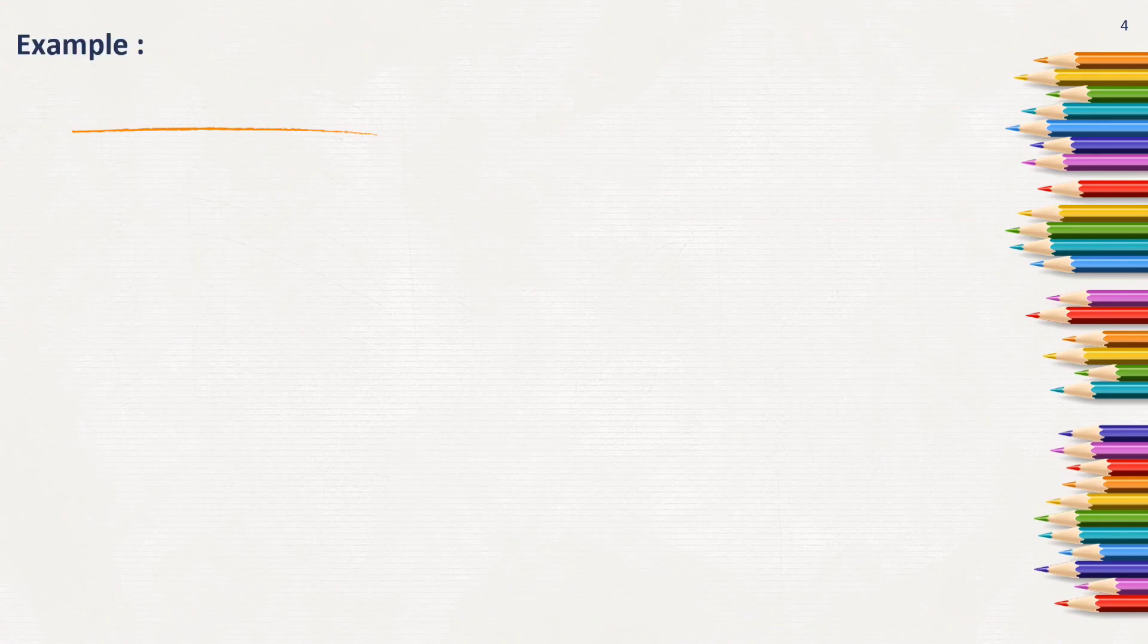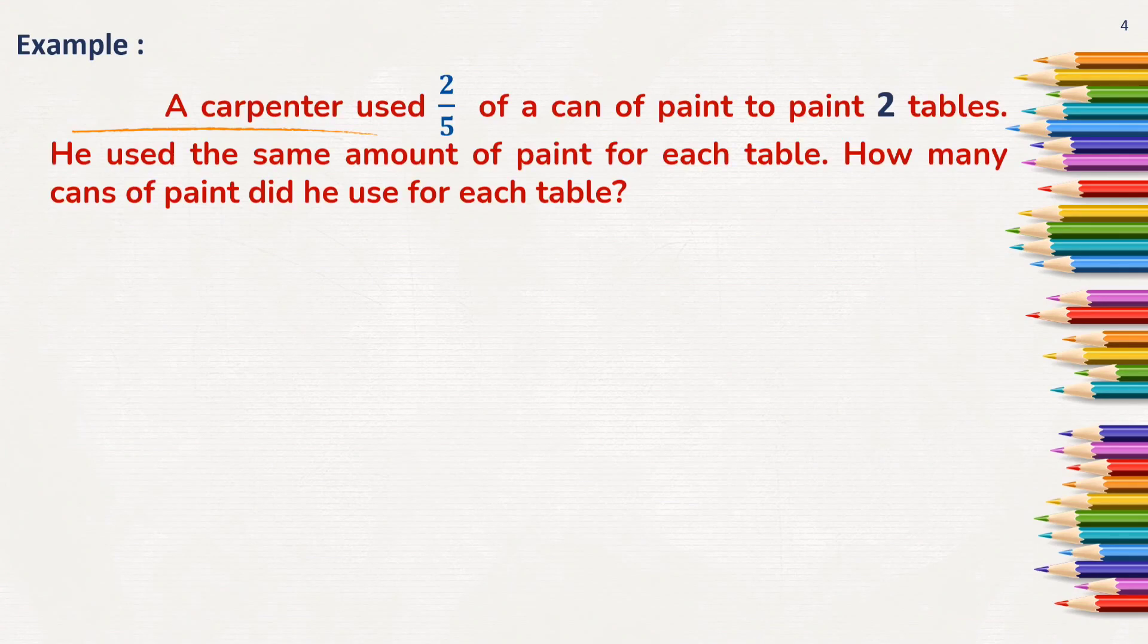Look at another example. Here, a carpenter used 2 by 5 of a can of paint to paint 2 tables. He used the same amount of paint for each table. So, we need to find here how many cans of paint did he use for each table.